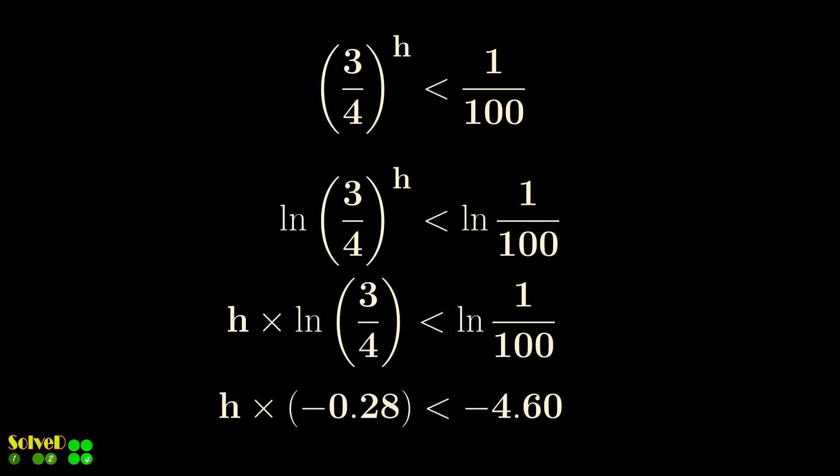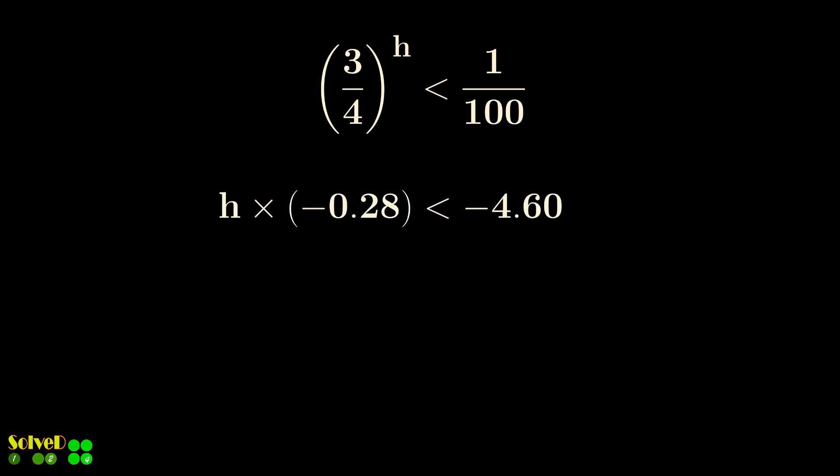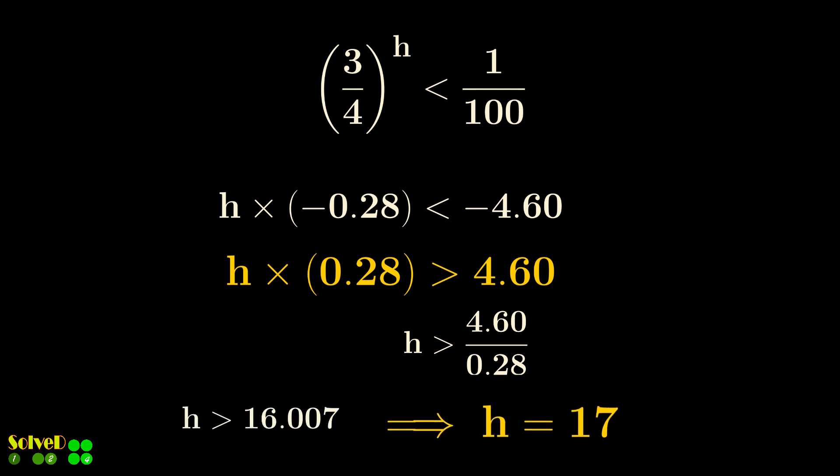It is important to note, multiplying both sides by minus one reverses the sign of the inequality. So H is greater than 16. Therefore, H equals 17 is the required step.